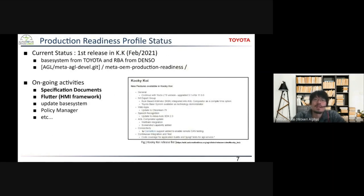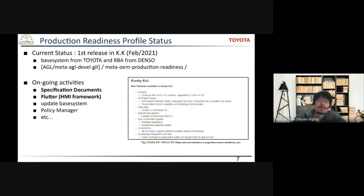We released the first version of the production readiness profile last year in the KK release. It included a base system from Toyota and RBA from Denso. Production readiness is currently maintained under meta-AGL-development. We continued to work on this activity. This year, we focused on specification documents for production readiness and Flutter support. Internally, we also plan to update the base system and disclose more functional modules to the production readiness profile in the future.